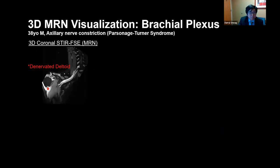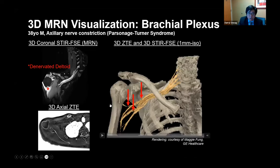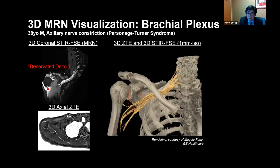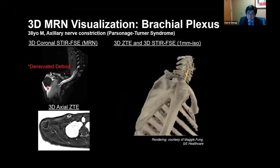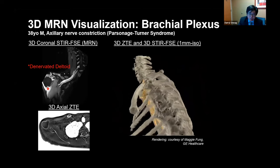A brachial plexus example: a 38-year-old male with axillary nerve constriction from Parsonage-Turner syndrome, with a denervated deltoid. We acquire 3D MRN to see the constrictions, then acquire a 3D ZTE for bone, render both together, and observe the constrictions in the axillary nerve — courtesy of our colleagues at GE Healthcare. The surgeon can see both bony landmarks and nerve constriction locations simultaneously.